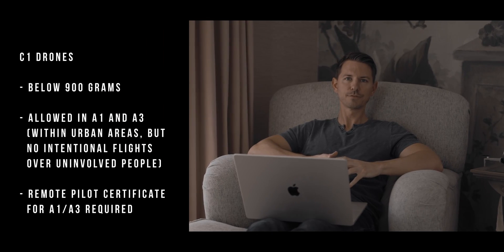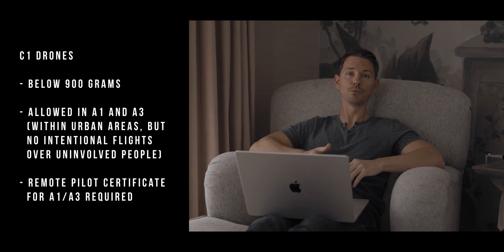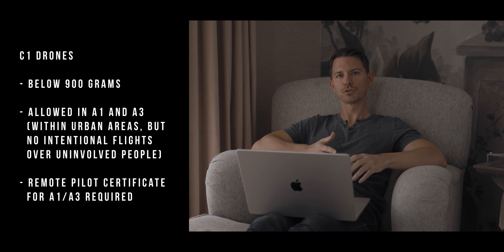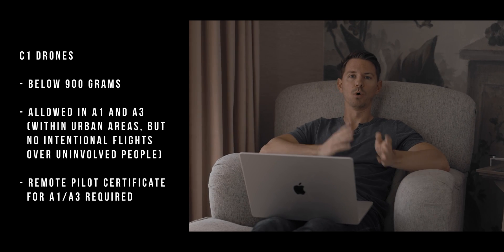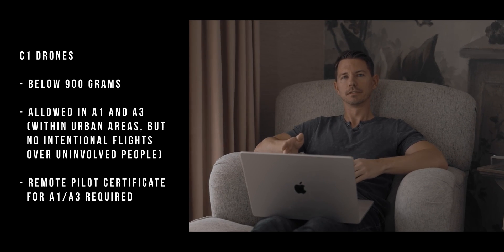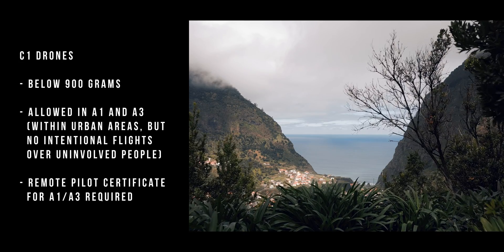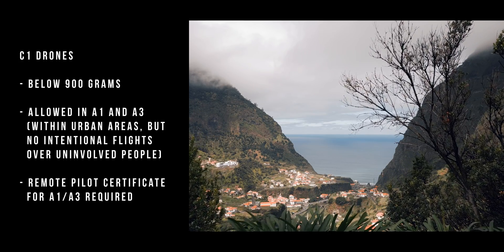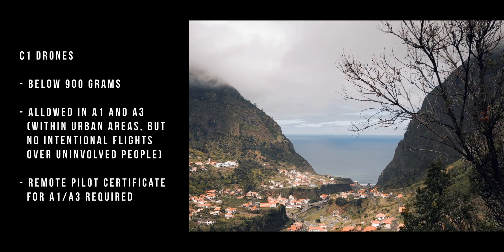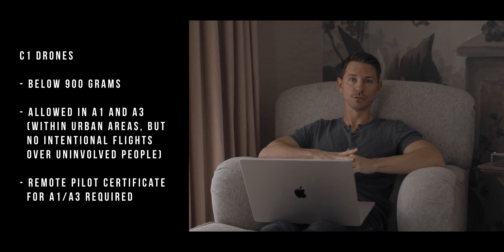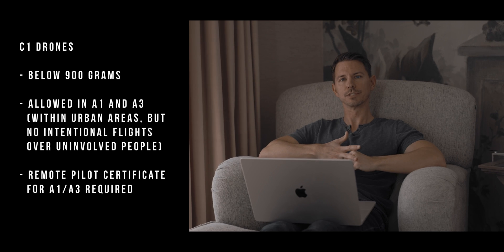Drones with C1 classification, like the DJI A3, are below 900 grams in weight and are also allowed to operate in airspace subcategory A1 and A3. The only difference from C0 drones is that even though you're technically allowed to fly over people, you should not intend to. To operate C1 drones, you have to obtain a remote pilot certificate for the A1 and A3 subcategory by completing the online training and passing the online exam provided by the National Aviation Authority of one of the EASA member countries.